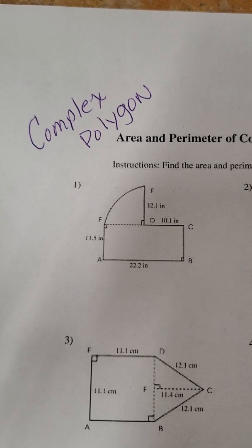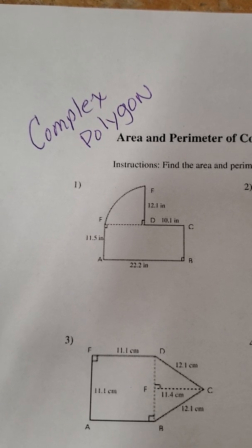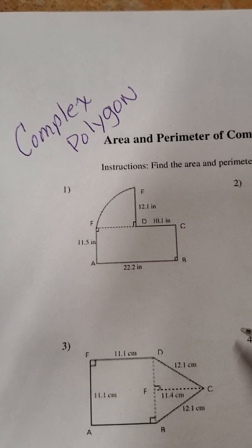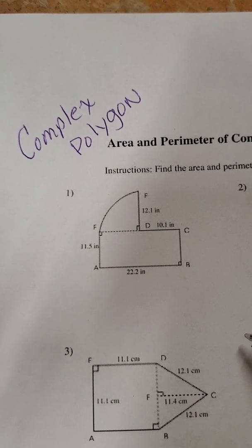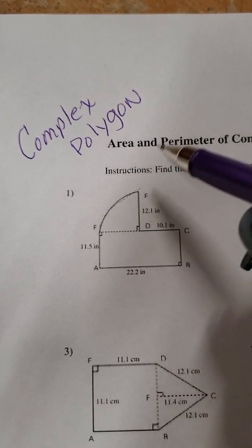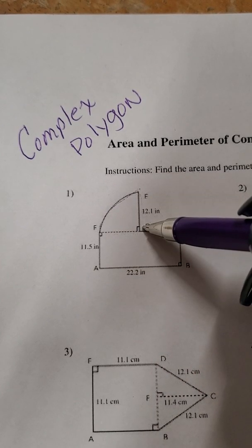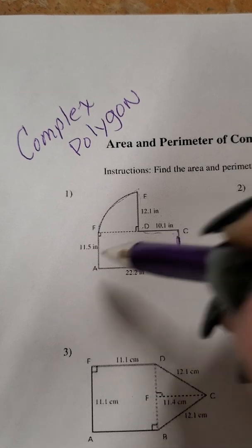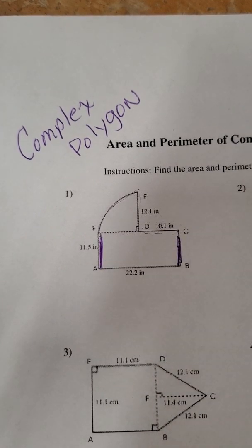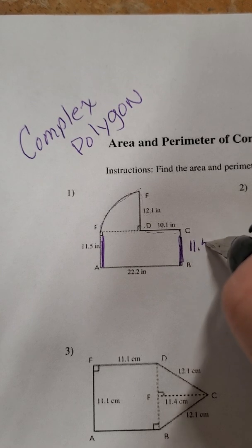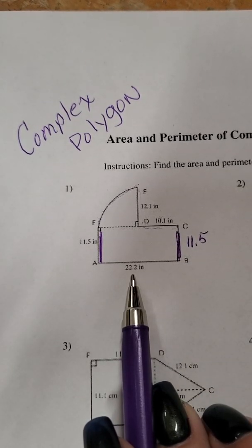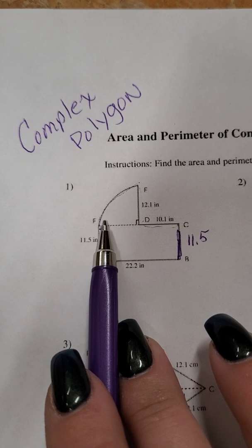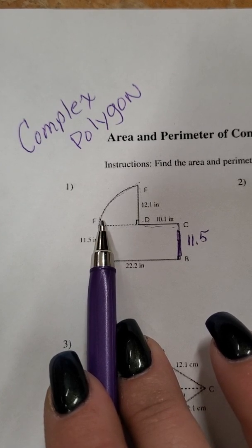And then to find the perimeter we need to find the unknowns. Perimeter on a circle is called circumference right. So we need to find all the missing pieces of this. So this would be a missing piece. This says 12.1, 10.3. Now this piece here is parallel to this piece here so they're going to be the same length. So I can fill that in with an 11.5. Down here I have 22.2.